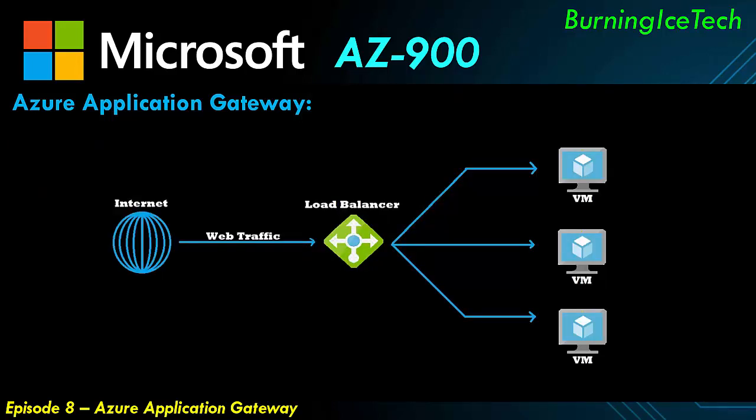If you take a look at this picture I've compiled, you can see there's a load balancer — that's generally what we'd use for normal load balancing. But when it starts involving web traffic, in other words HTTP, you'd want to replace that with an app gateway. That's because it gives you all kinds of extra features that allow you as the administrator to manage web traffic better. It's still a traffic distribution component, but with additional features.